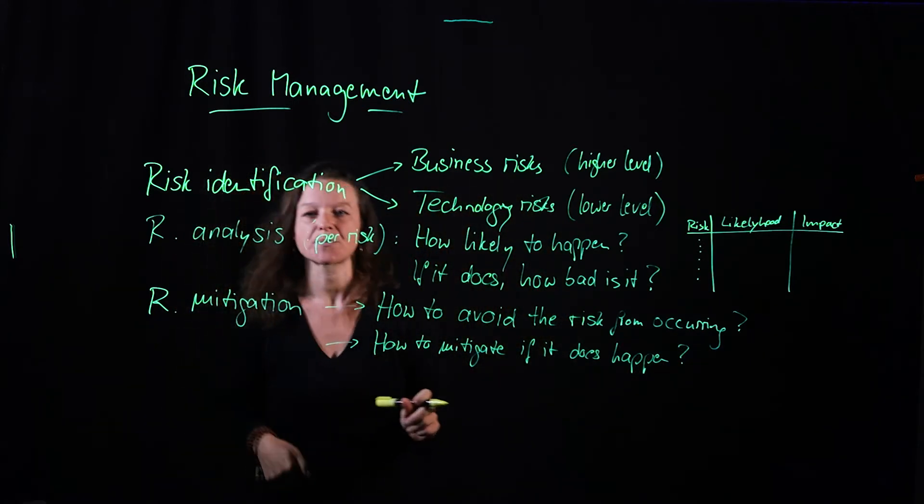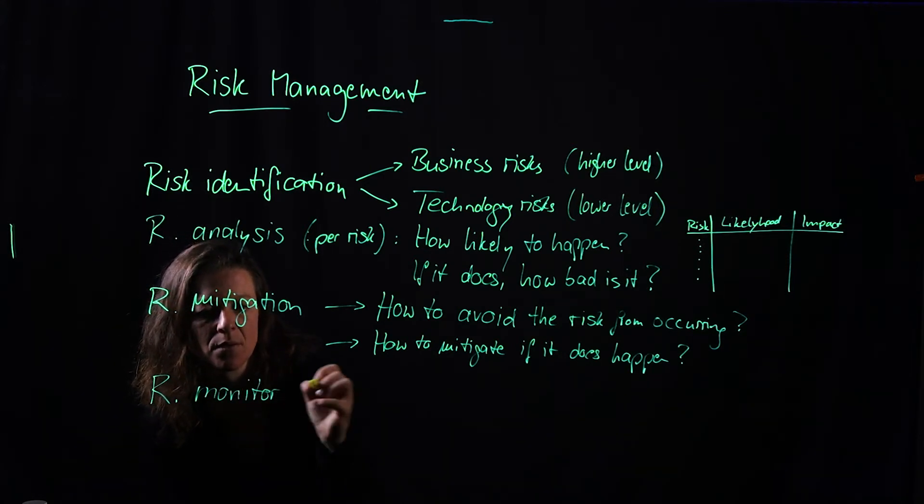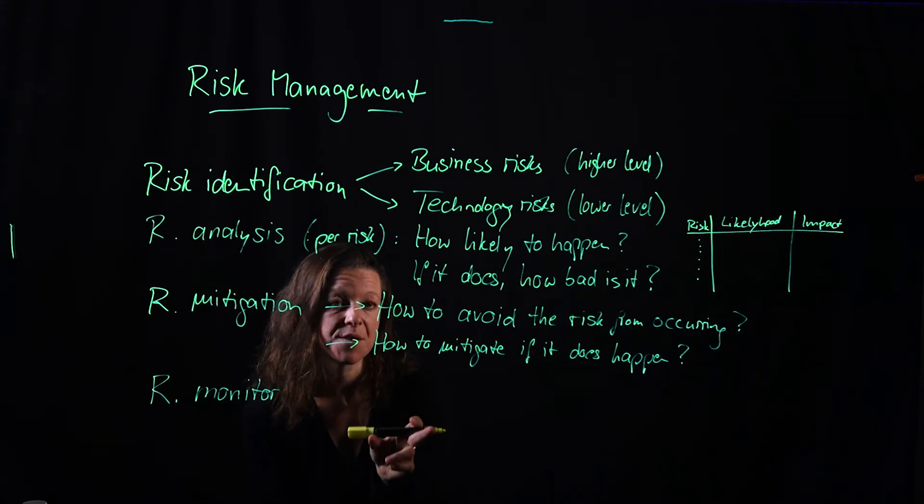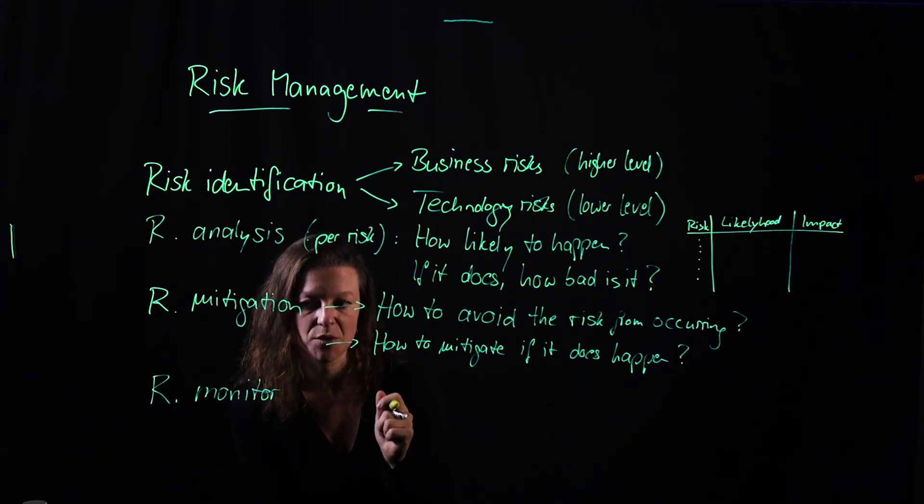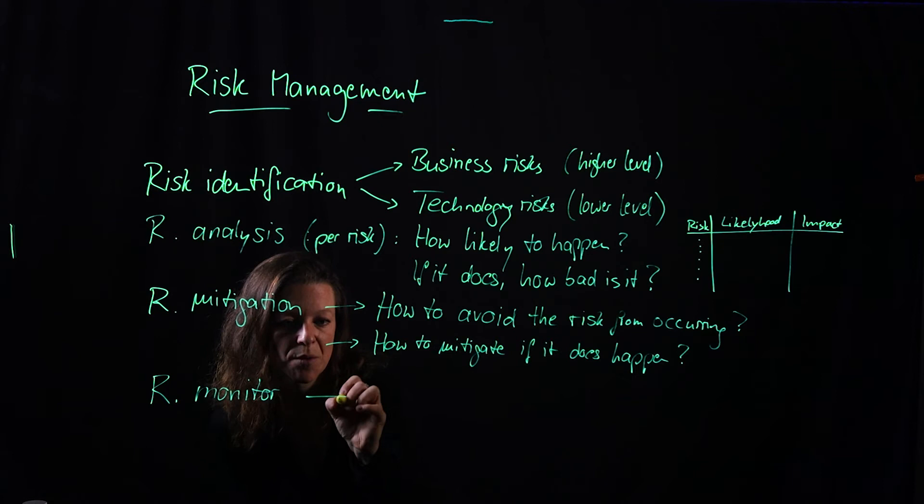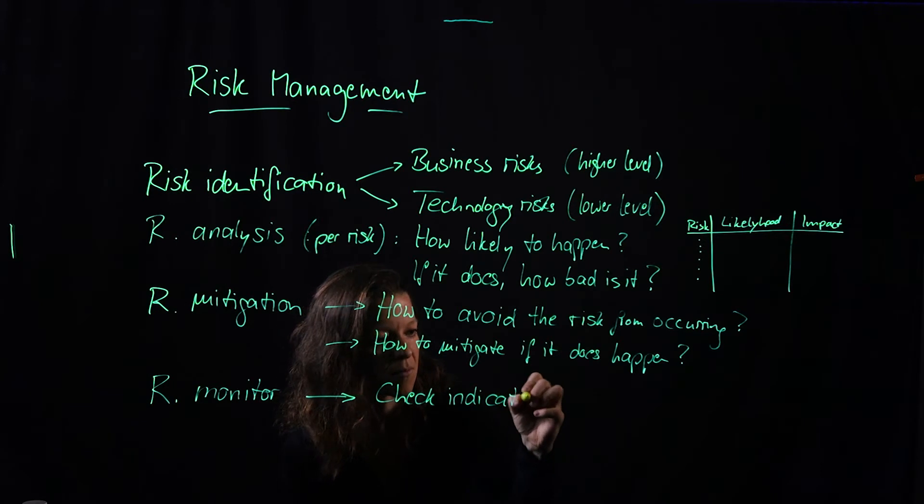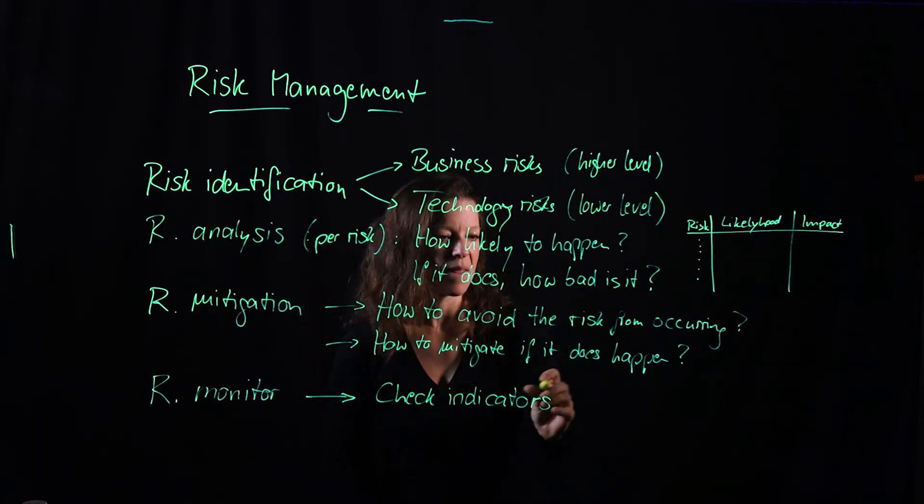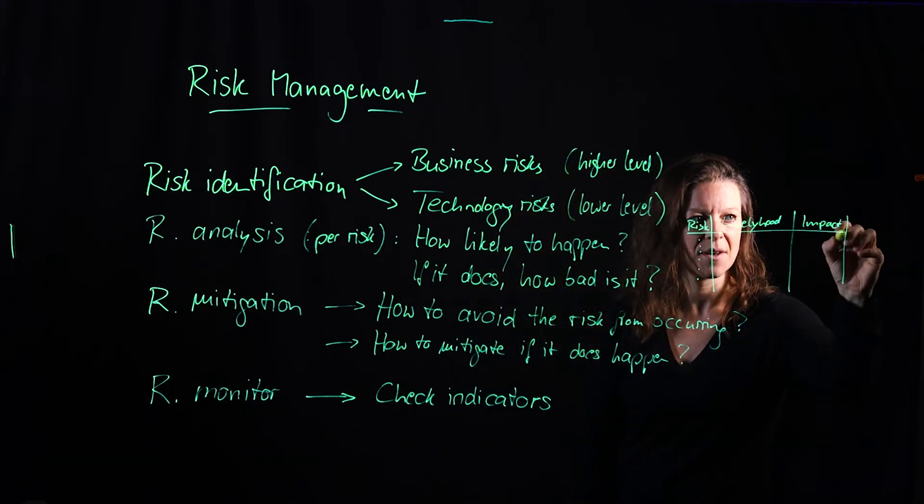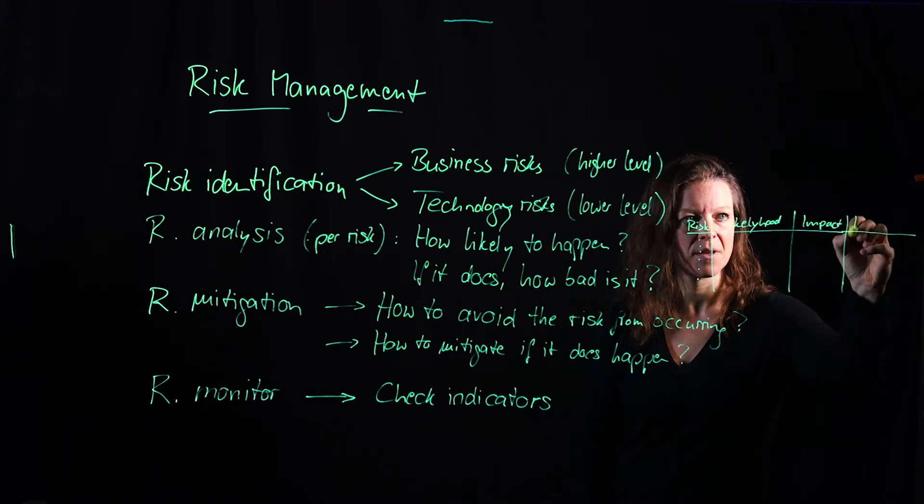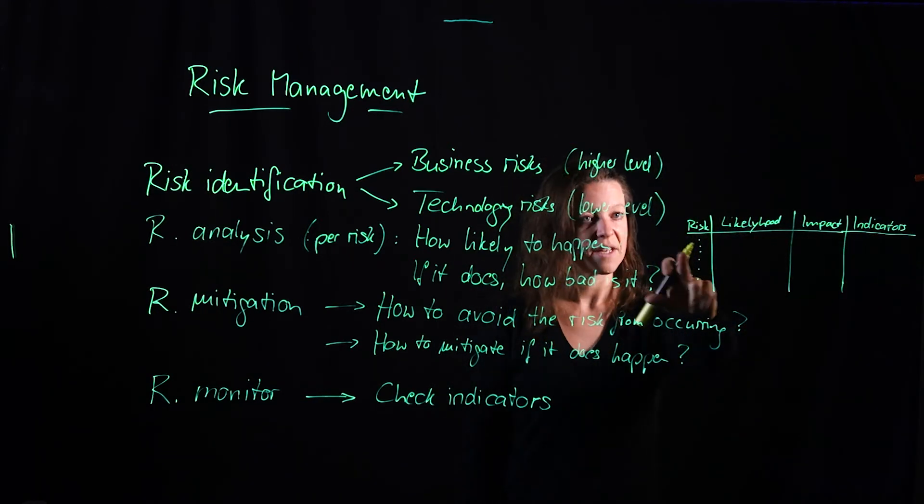And then finally, how are you going to control and monitor over time to see as early as you possibly can if something looks like one of your risks is going to happen. So monitor, check indicators that would lead to one of these risks coming up. So that means we should probably add a third element up here that are the indicators that would help us detect when is this probably going to happen.